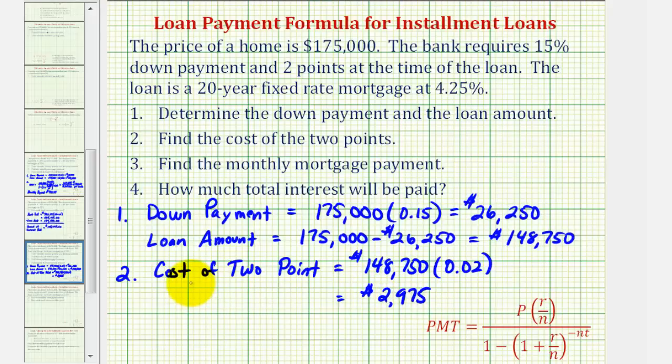So this means in order to purchase the home with this loan, the buyer would have to have the down payment and the cost of the two points. Now for number three, we're asked to find the monthly mortgage payment. We'll do this by hand using this formula here and also verify it using the finance menu on the graphing calculator.